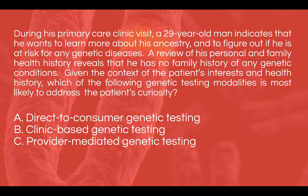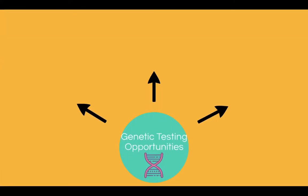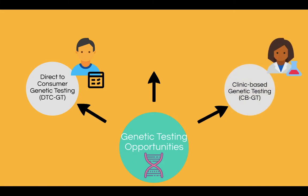Let's learn more about the different genetic tests available. Direct-to-consumer genetic testing is targeted directly to the consumer. The purpose is to provide information about a consumer's genetic information. DTCGT typically does not involve a healthcare professional or use health insurance to cover the cost of testing. On the contrary, clinic-based genetic testing is ordered, interpreted, and disclosed to the patient by a healthcare professional.